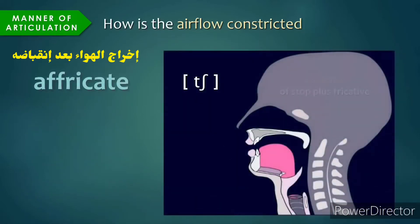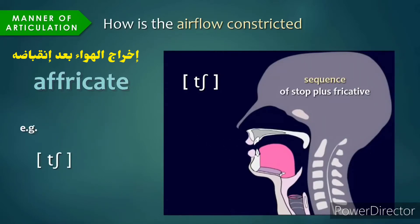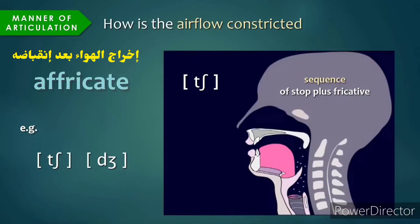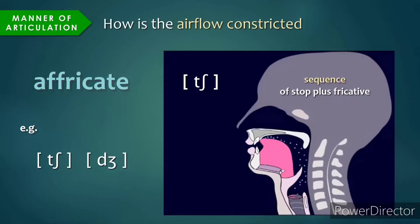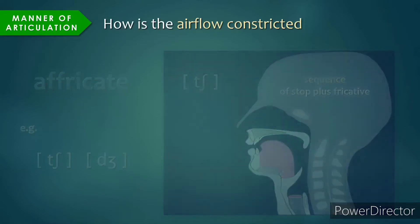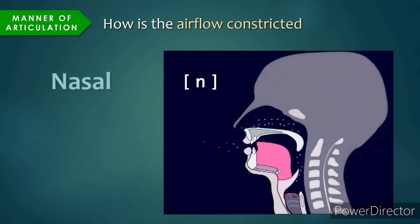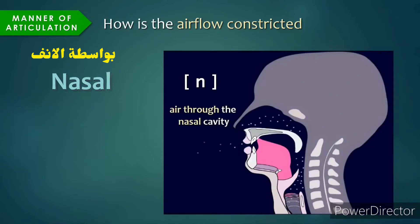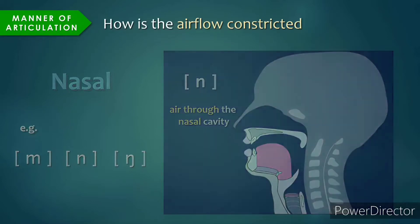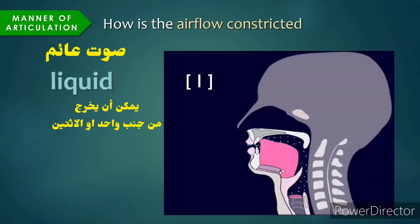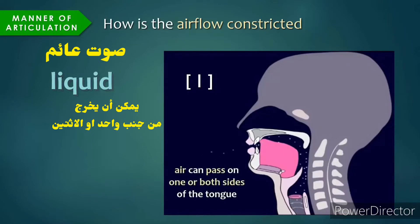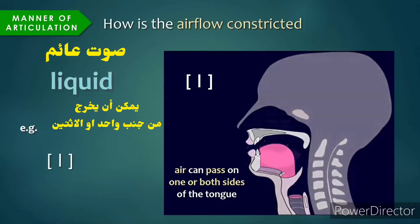Affricates result from a sequence of stop plus fricative in rapid succession, so the affricate ch represents t plus sh, just as the affricate j results from d plus j. Nasal sounds are produced when the velum is lowered, allowing air to pass through the nasal cavity, such as m, n. Liquid sounds are produced by allowing air to pass by one or both sides of the tongue, and the tongue itself can move a lot to shape the sound, such as l, r.